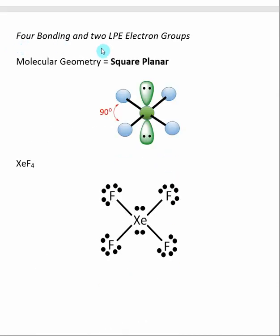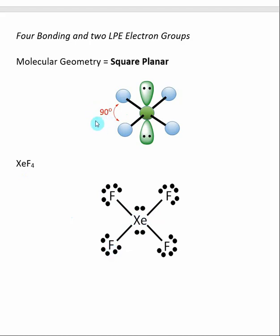With six groups of electrons, four bonding and two lone pairs, the molecular geometry is called square planar. Two bonds are replaced by lone pairs. It's called square planar because the four central atoms form a square, and all four bonds are in the same plane. An example is xenon tetrafluoride — the central xenon has four bonds and two lone pairs, making its geometry square planar. The only bond angle between adjacent atoms is 90 degrees, so the fluorine-xenon-fluorine bond angle is 90 degrees.